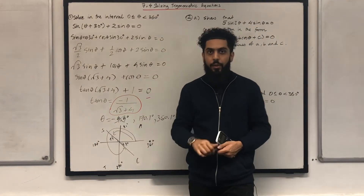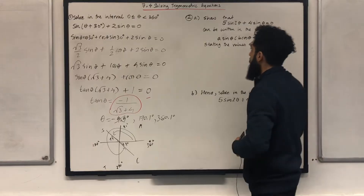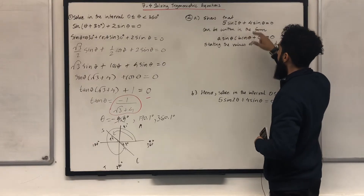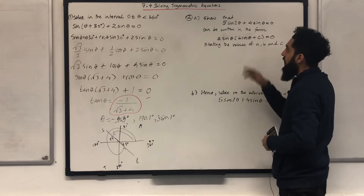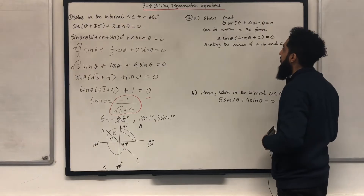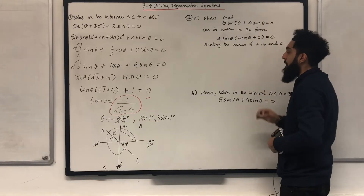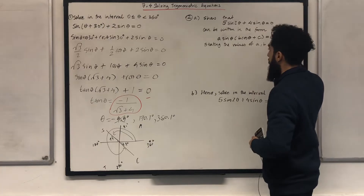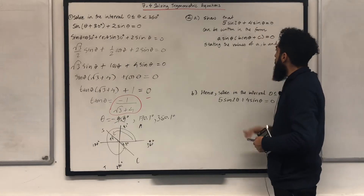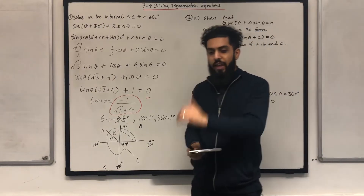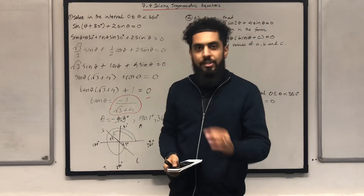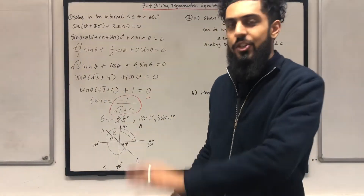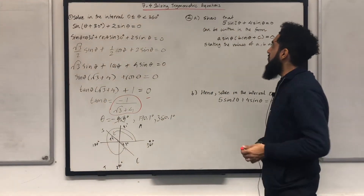Let's have a look at question two. Question two, part a: show that 5 sine 2 theta plus 4 sine theta equal to 0 can be written in the form A sine theta in bracket B cos theta plus C equal to 0, stating the values of A, B, and C. Time to take out the orange juice — I like the juicy maths questions.